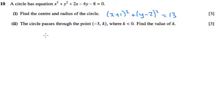Part 2 says that the circle passes through the point minus 3, k, and it's telling us also that k is negative. So to work out what k is, k is the y value when x is equal to minus 3.